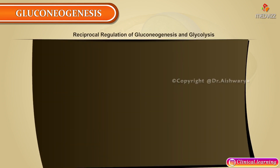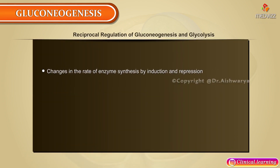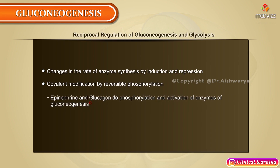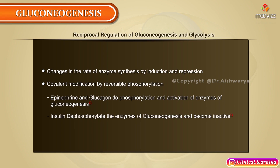Reciprocal regulation of gluconeogenesis and glycolysis occurs via: changes in enzyme synthesis by induction and repression; covalent modification by reversible phosphorylation — epinephrine and glucagon phosphorylate and activate enzymes of gluconeogenesis, while insulin dephosphorylates and inactivates them; and allosteric modification by acetyl-CoA and fructose 2,6-bisphosphate.